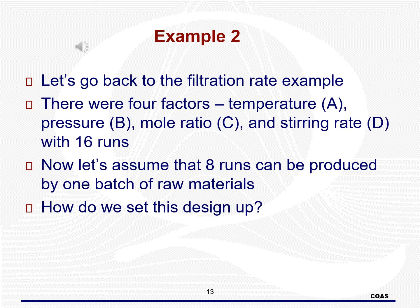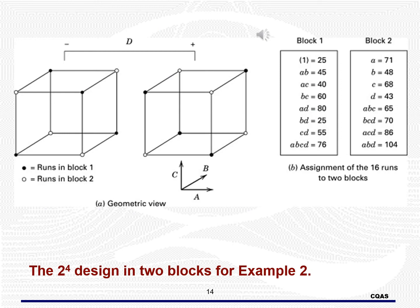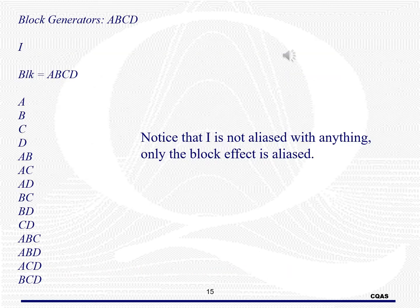Let's return to our filtration example. This example had four factors, and we now assume that only eight runs can be produced under homogeneous conditions. We will set this up using a block on batch of raw materials, confounding the block with the interaction ABCD. All of the runs where ABCD is at a plus are in block one, and all of the runs where ABCD is at a minus are in block two. Here is the alias structure for the design — notice that the only term affected by the block is ABCD, so everything else is free and clear.